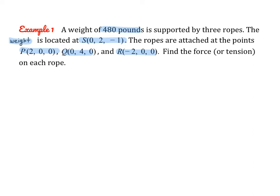This problem is a little bit tricky conceptually because we're asked to find the force or the tension on each rope — the force being the magnitude. However, we cannot simply use our given points and the magnitude formula to find that force, because when we look at each vector individually it doesn't take into account the force of the other vectors at play.